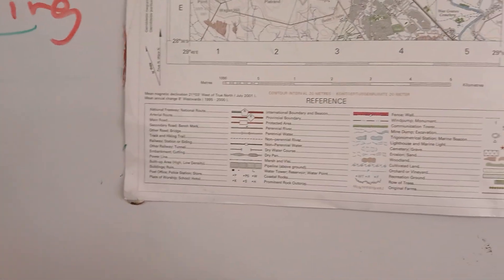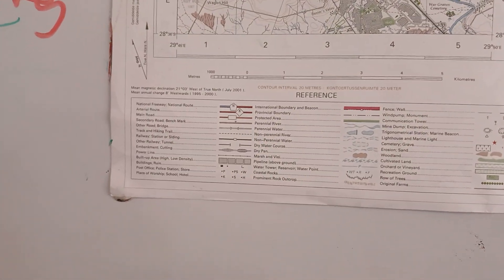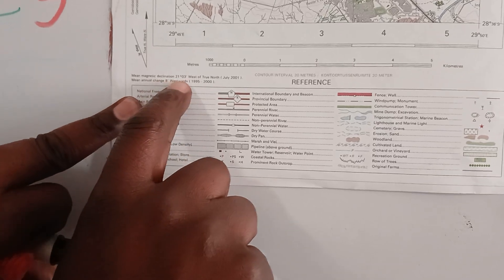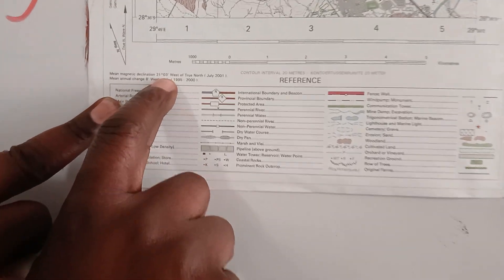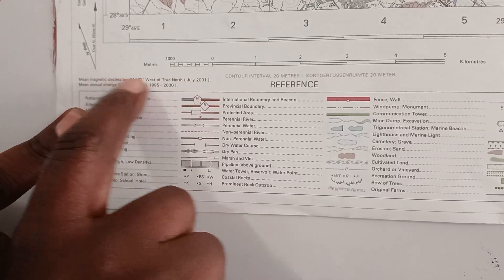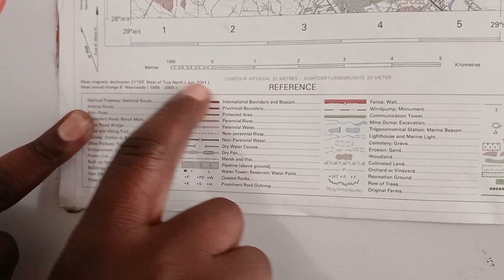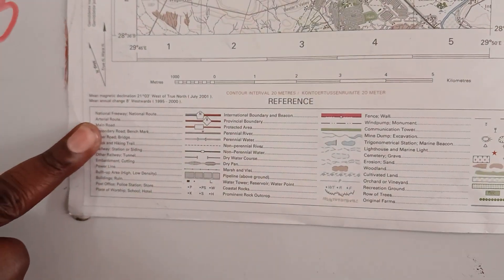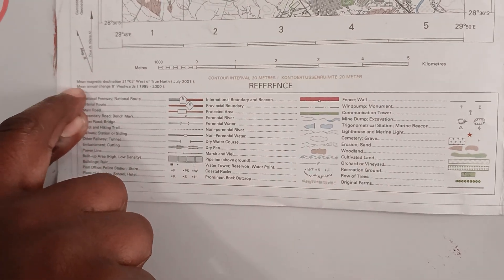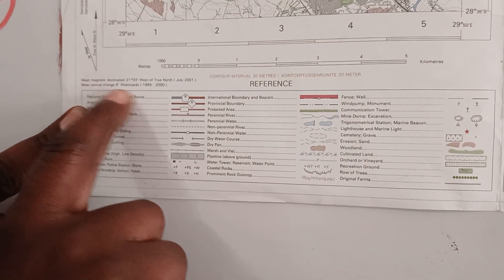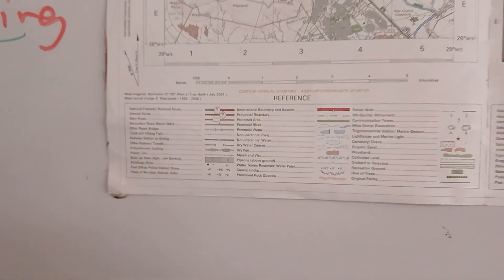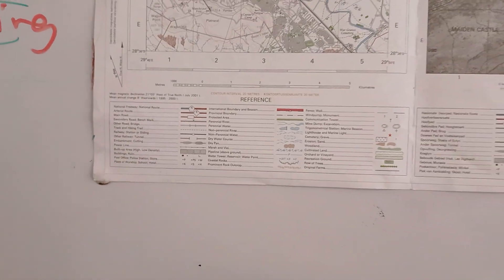I'm going to use this map to make sure that you understand. You can see: magnetic declination, 21 degrees 3 minutes west of true north. This was for 2001, and this is the information you use when calculating your magnetic declination. You also have your mean annual change, which is 8 minutes westward — that is the change per year.